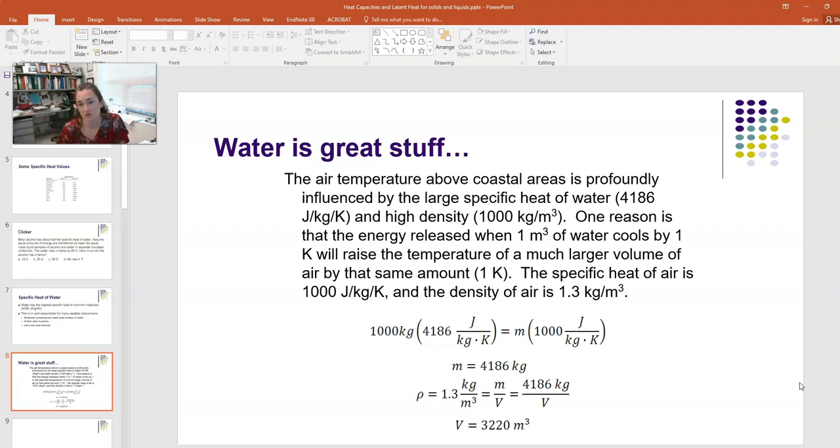Remembering our equation mc delta T, both temperature changes are one degree. The water is losing one degree, and the air is gaining it. We'll find what mass of air would be heated by the loss of 1000 kilograms, or one cubic meter, of water. We're setting Q equals mc delta T for water equal to Q equals mc delta T for air. The delta Ts are the same magnitude, so they cancel out.